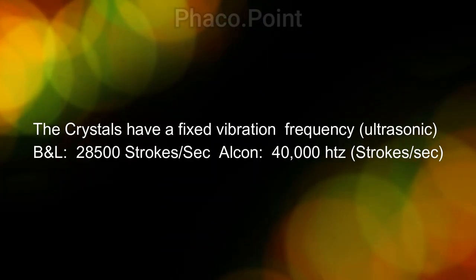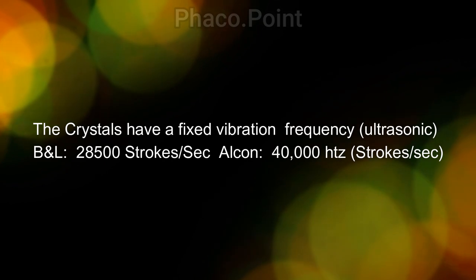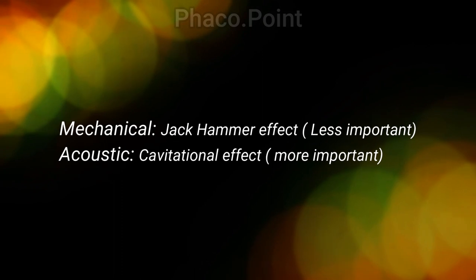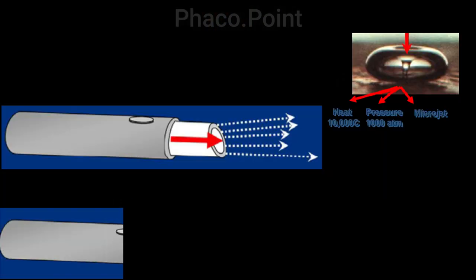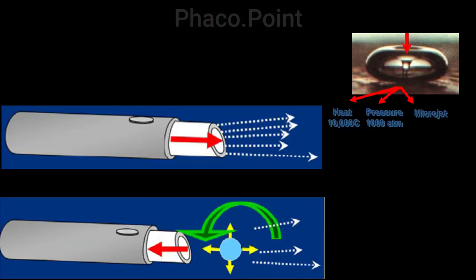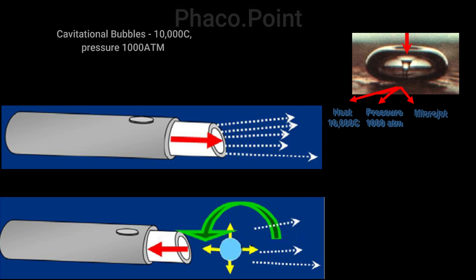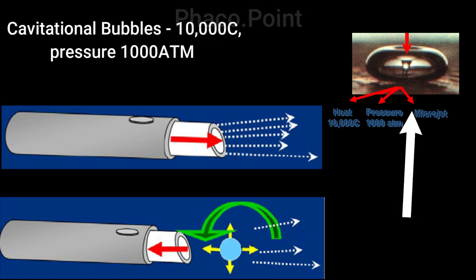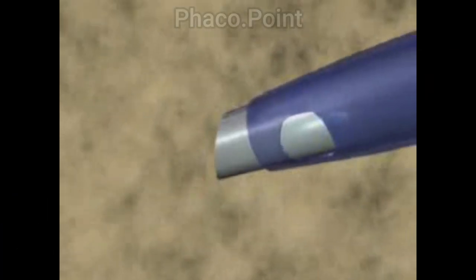But the reality is the energy generated is by two effects. The first is a mechanical effect — the jackhammer effect of the movement of the tip. The second is a cavitational effect, which is more important. The rapid to-and-fro motion of the titanium tip creates a vacuum in front of it that causes small cavitational bubbles to be generated. These bubbles implode at the speed of light, releasing tremendous heat of 10,000 degrees centigrade and very high pressures of about 1,000 atmospheres, and this is the reason why emulsification occurs.